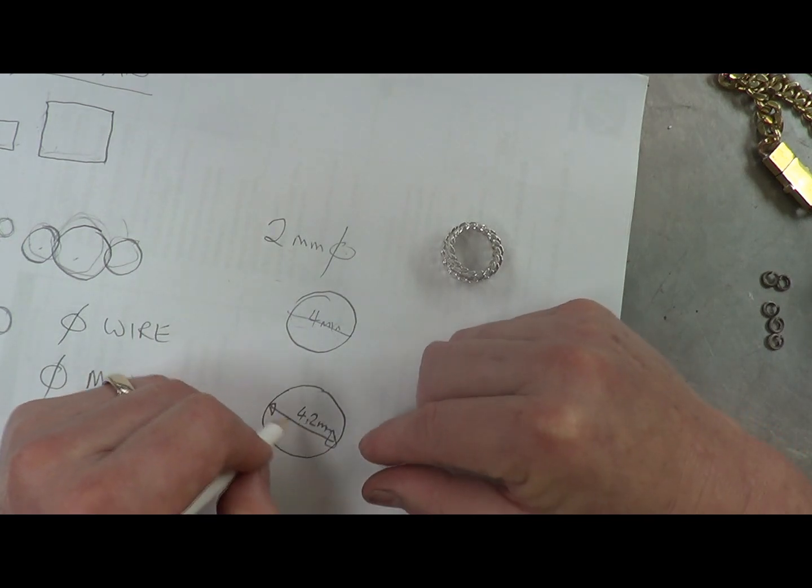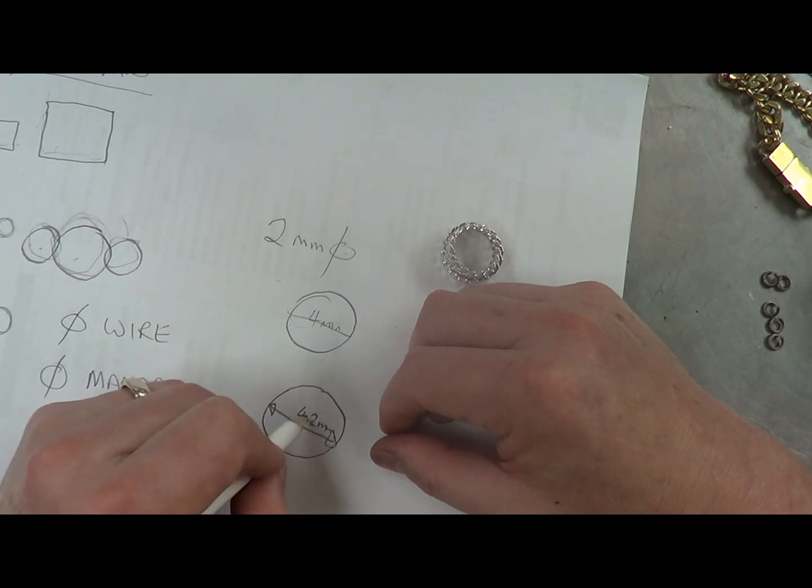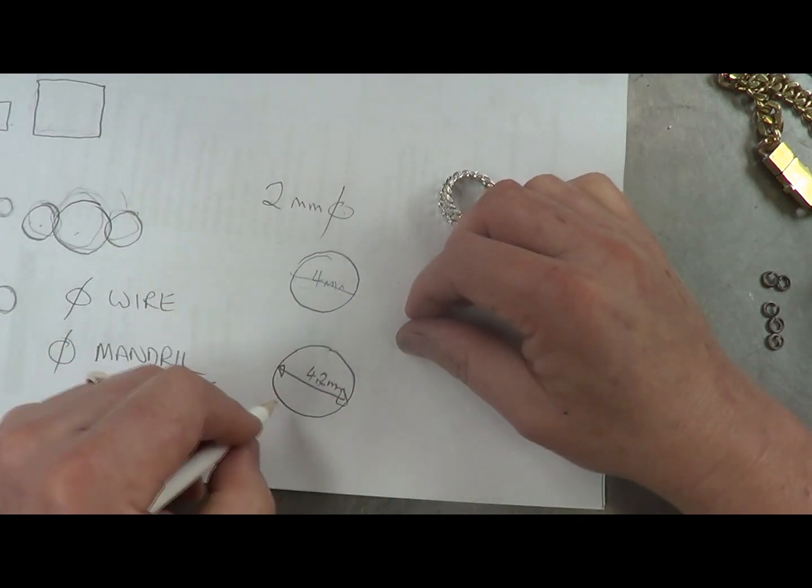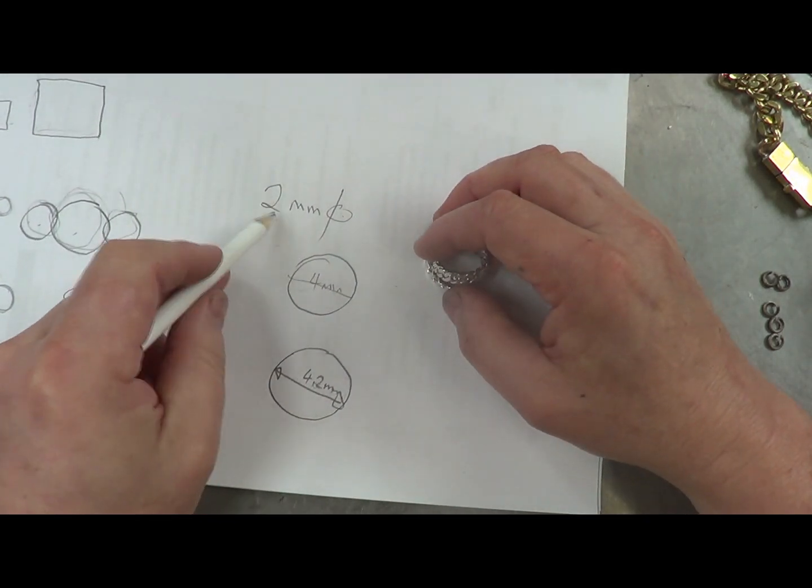I'll give myself 0.2 mill, that's for a tight aspect ratio, a tight link. I'll give myself a 0.2 millimetre increase on two thicknesses of the wire.